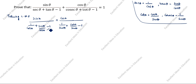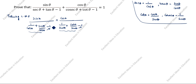Next, we will simplify by taking the common denominator. In the first fraction the denominator is cosθ, and in the second fraction the denominator is sinθ. So taking cosθ as common gives (1 + sinθ − cosθ)/cosθ, and sinθ as common gives (1 + cosθ − sinθ)/sinθ.